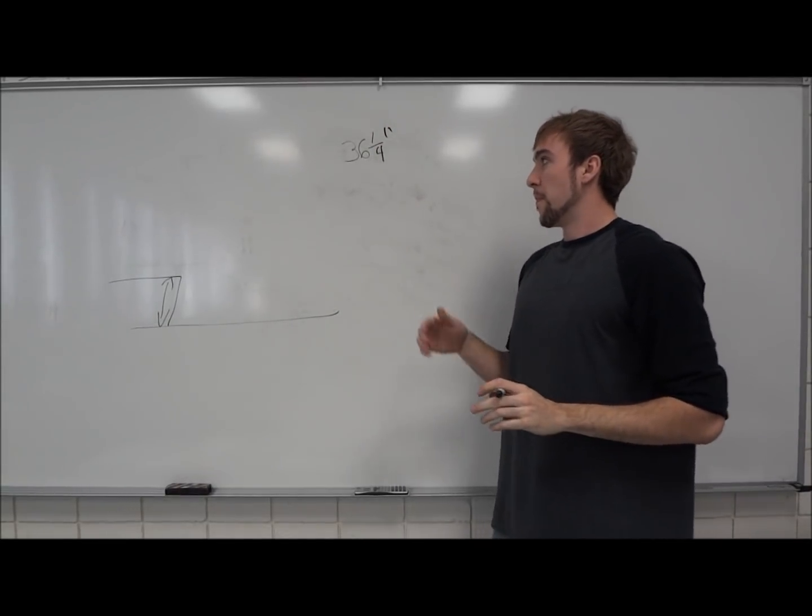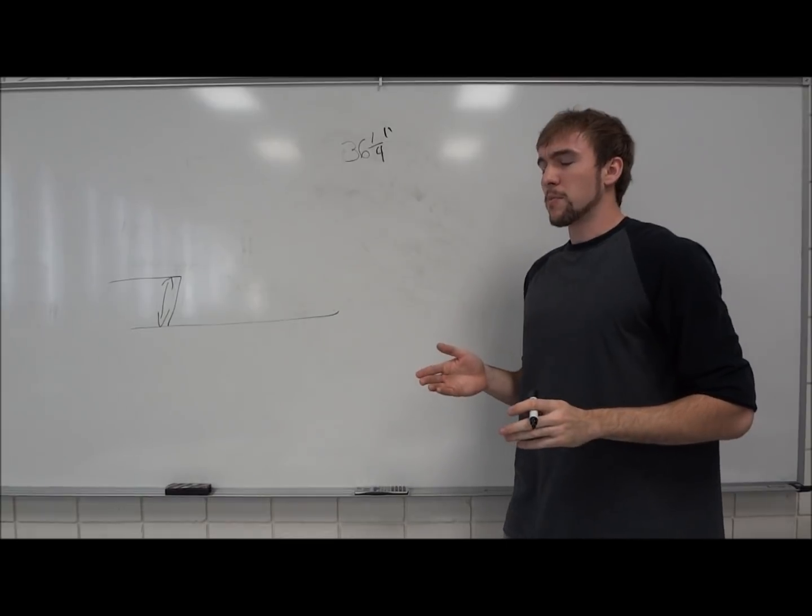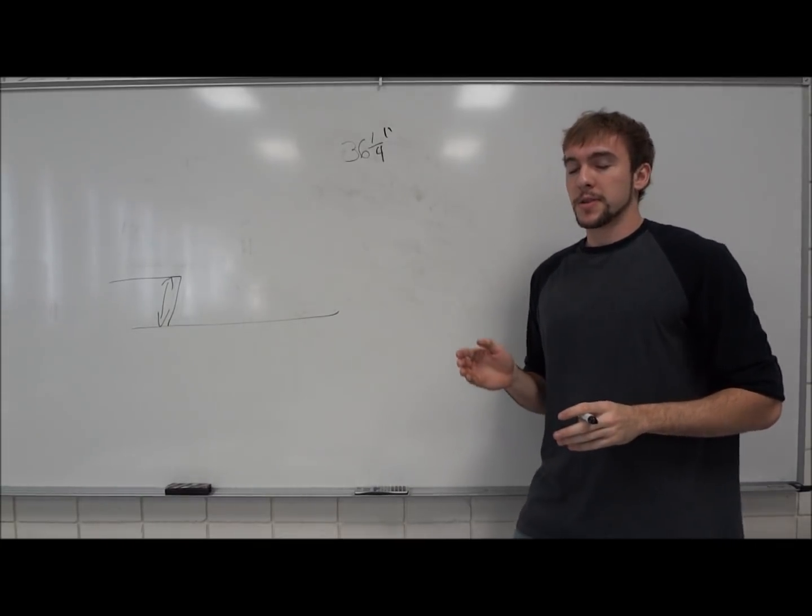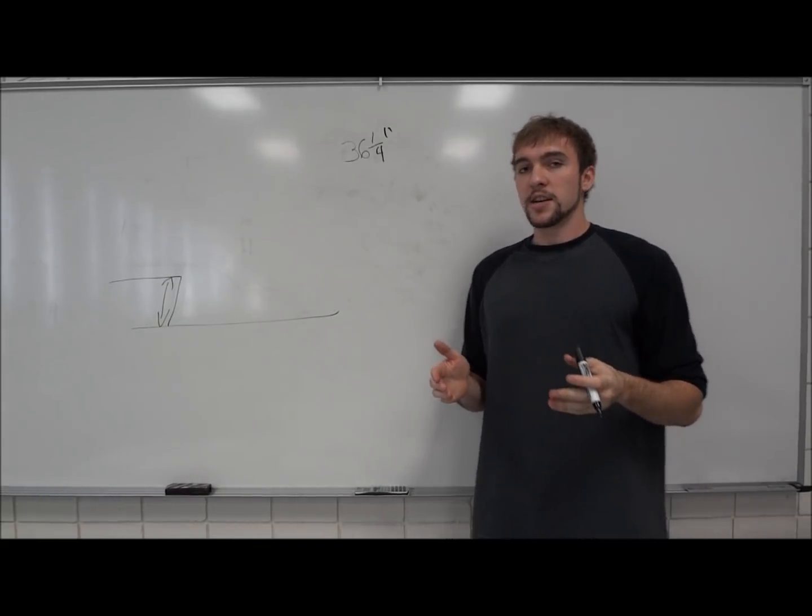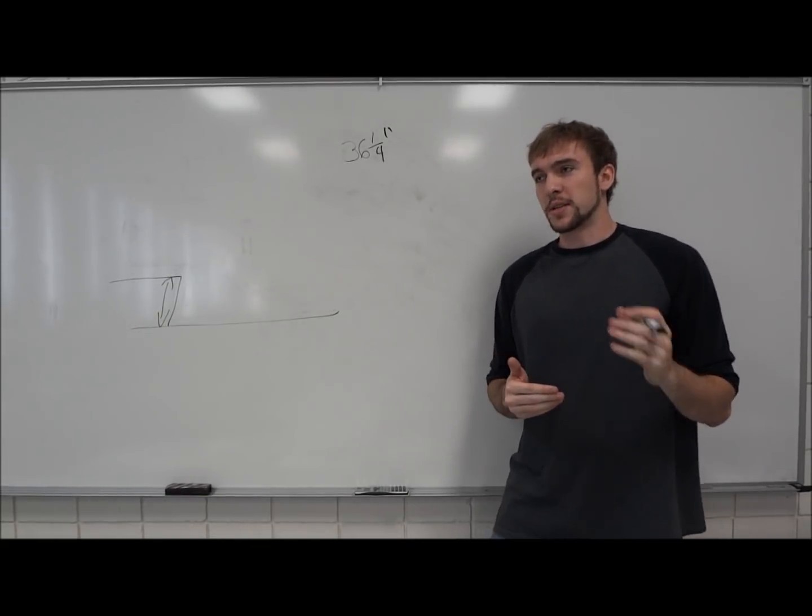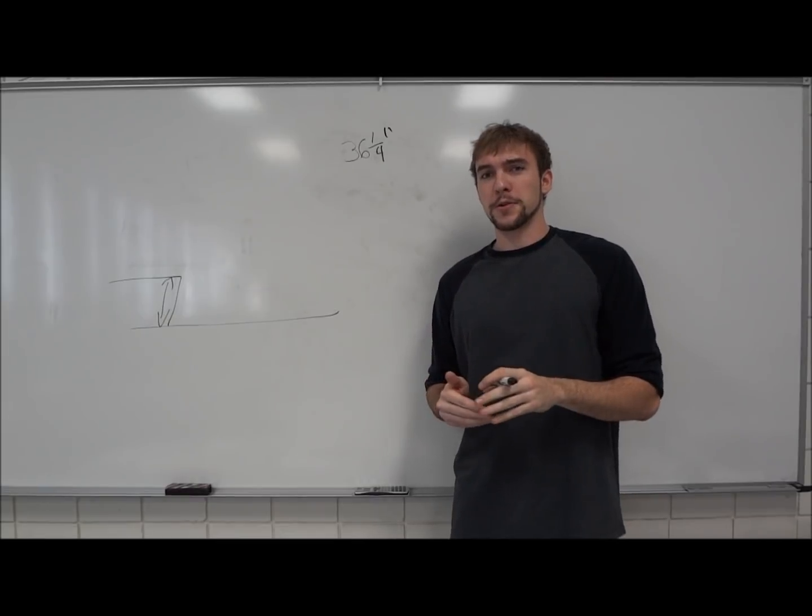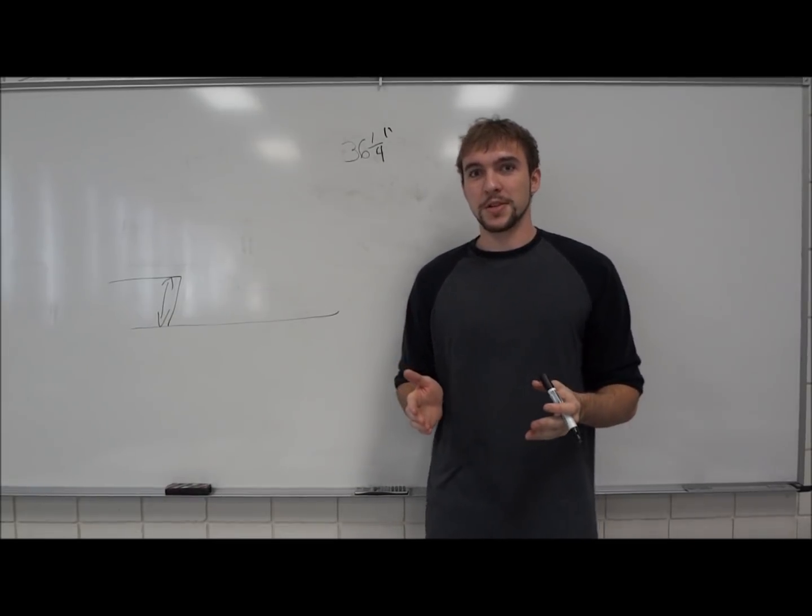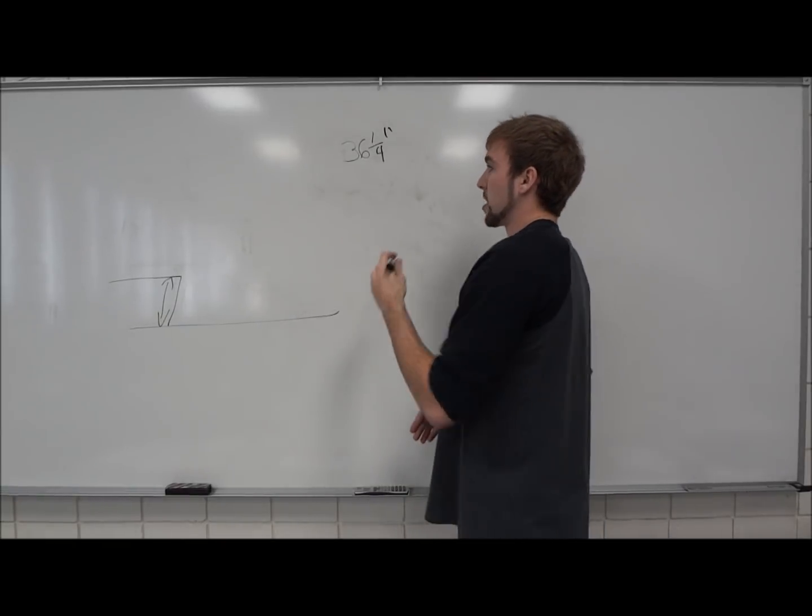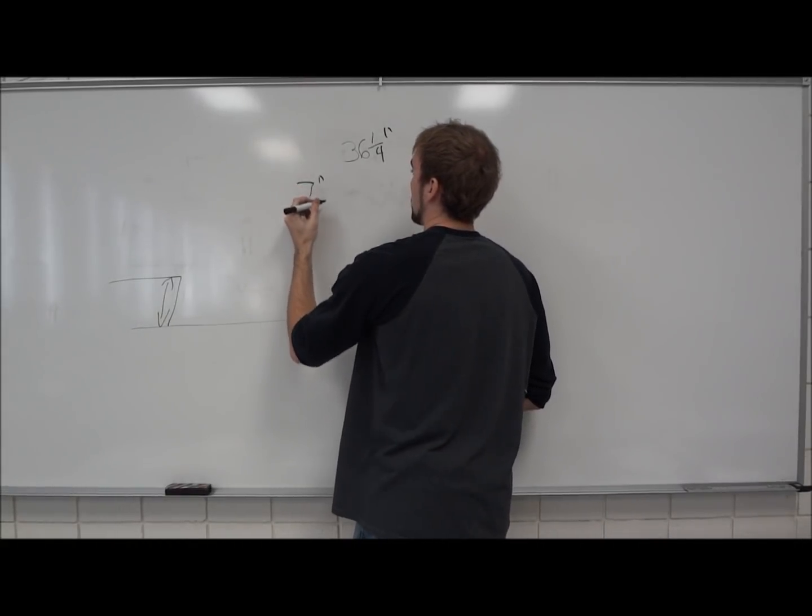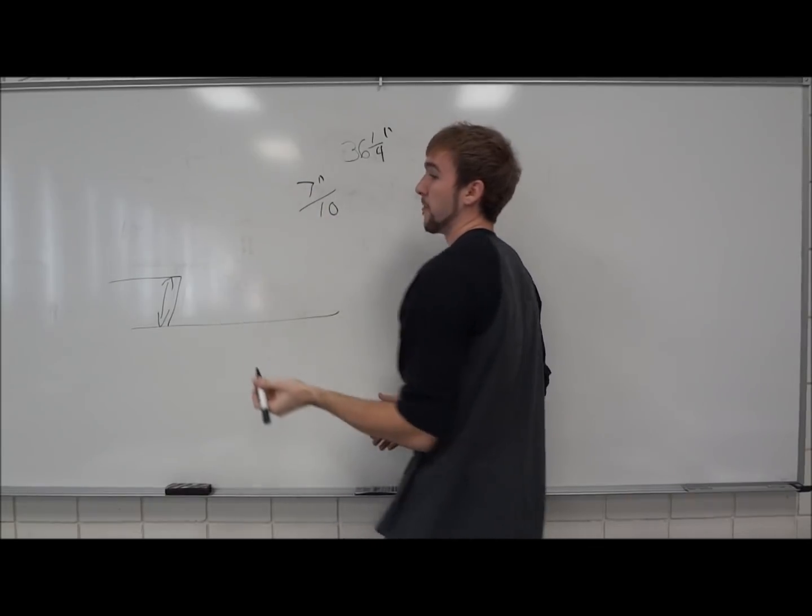Next thing we need to know is most commercial code requires a certain rise and a certain run for each one of your steps. Generally, your rise should be between 7 inches and 7 and 3 quarters and run is somewhere around 10 inches. For this case, we're just going to go by 7 over 10, 7 inches rise over a 10 inch run to start off with.